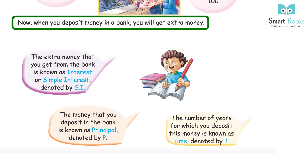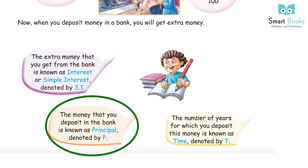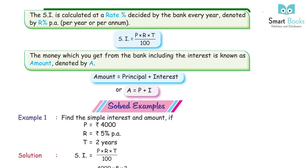When you deposit money in a bank, you will get extra money. The extra money you get from the bank is known as interest or simple interest, denoted by SI. The money you deposit in the bank is known as principal, denoted by P. The number of years for which you deposit is known as time, denoted by T. The SI is calculated at a rate percent decided by the bank every year, denoted by R% per annum (PA).